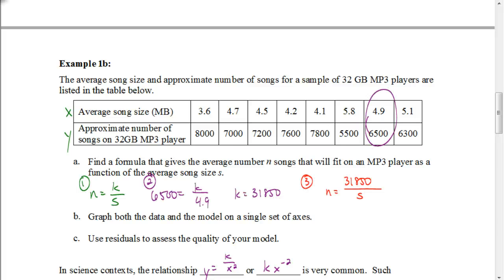You should have set up a general equation in the form N equals k divided by S. Using the data point where average song size is 4.9 megabytes and number of songs is 6,500, solving for k gives k equals 31,850. So the specific variation equation is N equals 31,850 divided by S.